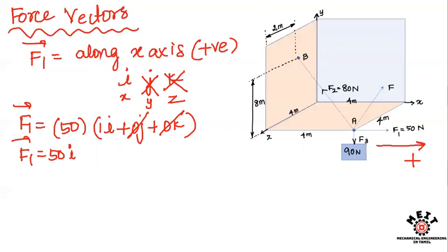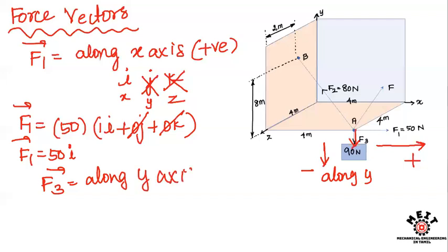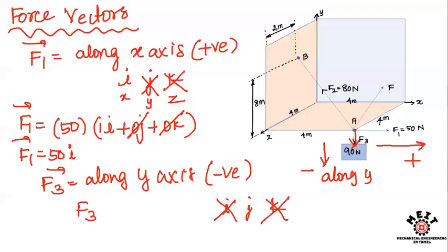F3 acts along the y-axis in the downward direction, which is the negative direction. So F3 vector equals 90 N times minus j, giving F3 vector equal to minus 90j N.